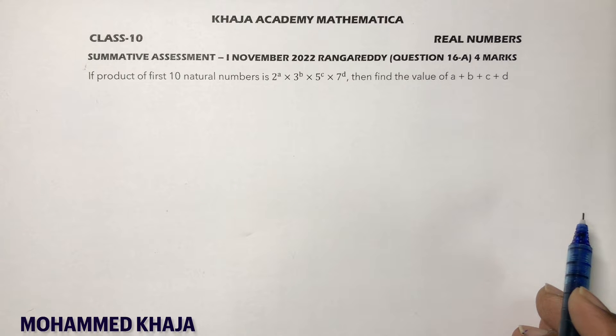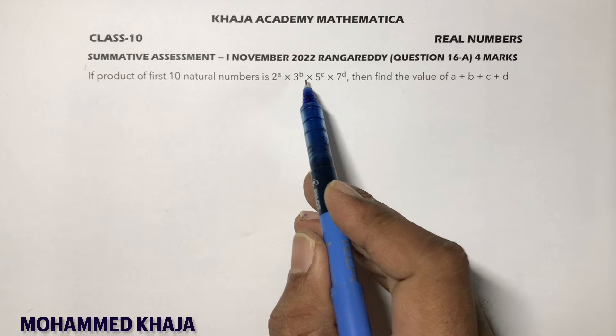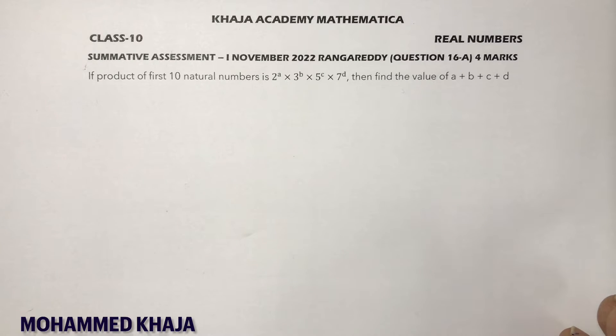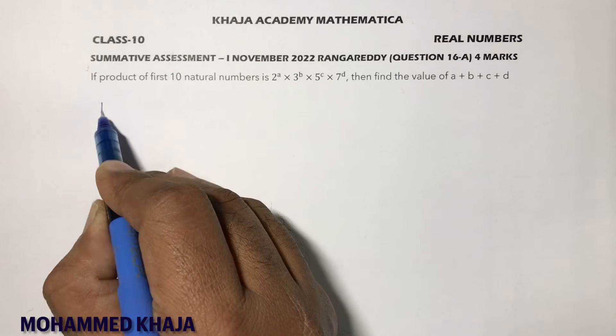If product of first 10 natural numbers is in the form of 2^a × 3^b × 5^c × 7^d, then find the values of a+b+c+d. Product of first 10 natural numbers.